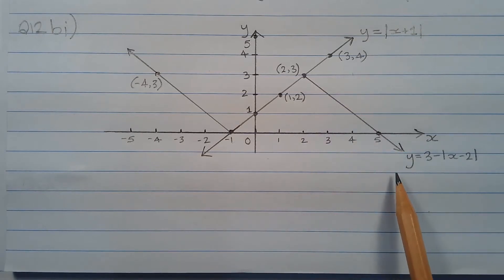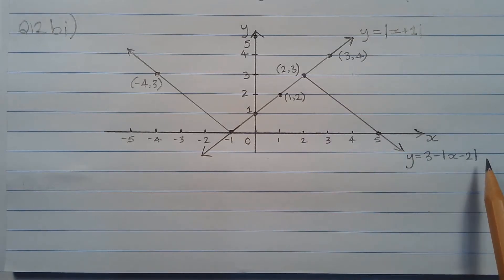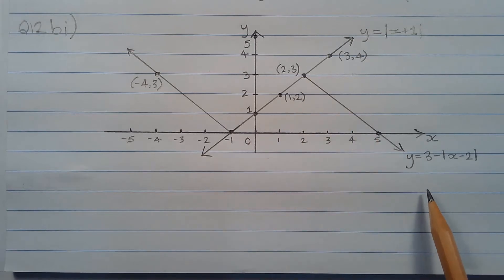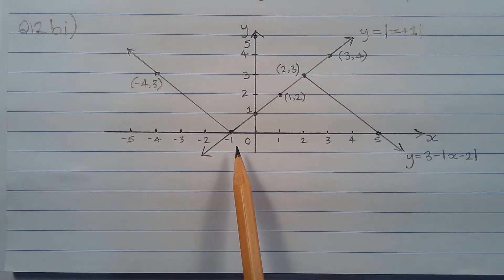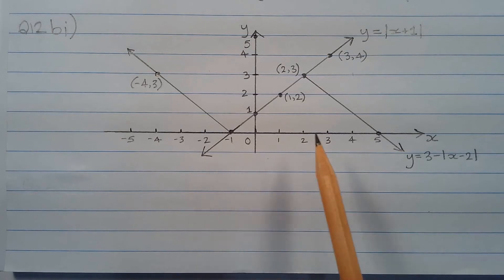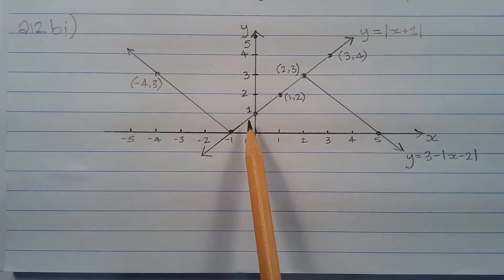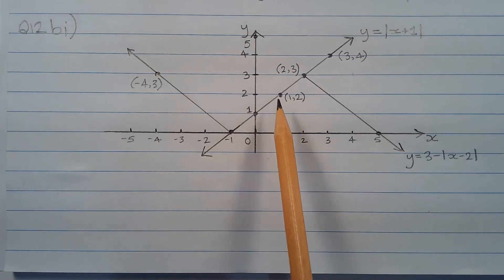The graph of y equals 3 minus the absolute value of x minus 2 is an upside-down v-shape with vertex at 2 comma 3, x-intercepts at negative 1 and 5, y-intercept of 1, and passing through the point 1 comma 2.